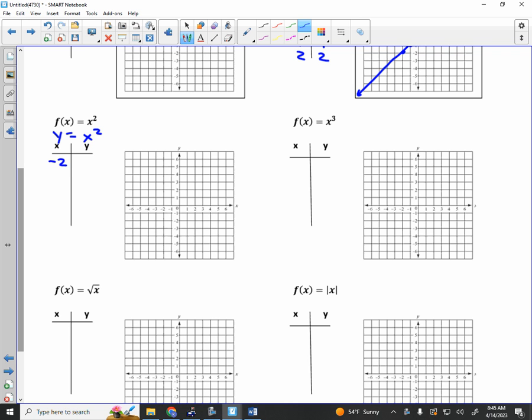It's a parabola. If we plug in negative 2 for x, negative 1, 0, 1, and 2, it will produce y values. If we take negative 2 and we square it, we get 4. Negative 1 squared is 1, 0 squared is 0, 1 squared is 1, and 2 squared is 4.